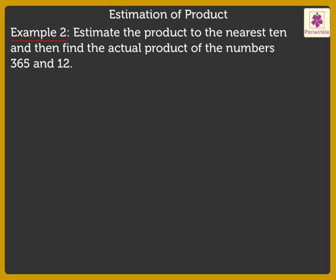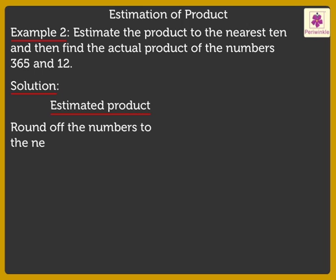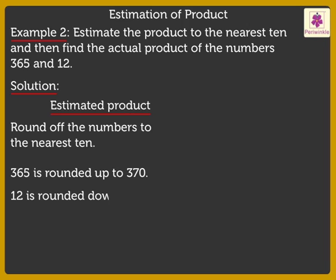Now, let us quickly solve one more example. Here, to estimate the product, round off the numbers to the nearest 10. So, 365 is rounded up to 370 and 12 is rounded down to 10.